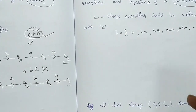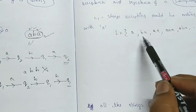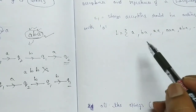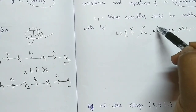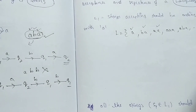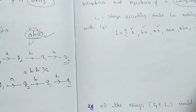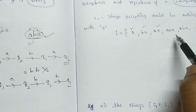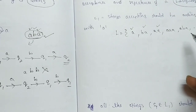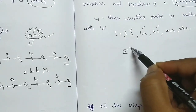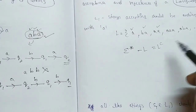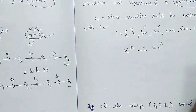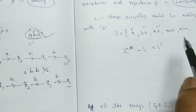What is language-wise acceptance by finite automata? If all the strings belonging to the language are accepted by the finite automata, and all the other strings in sigma-star that do not belong to L are rejected by the finite automata, then we say the finite automata accepts the language.